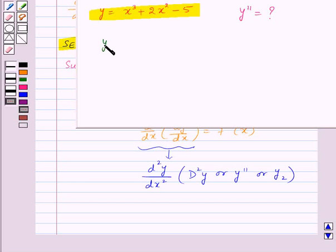So here y dash will be equal to 3x square plus 4x. So now differentiating again with respect to x, we get y double dash is equal to 6x plus 4.